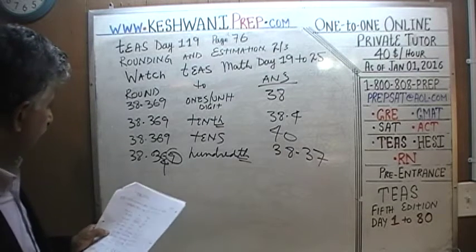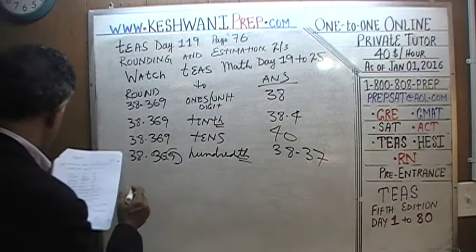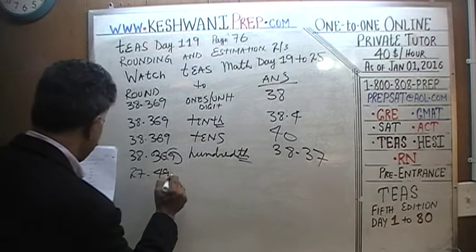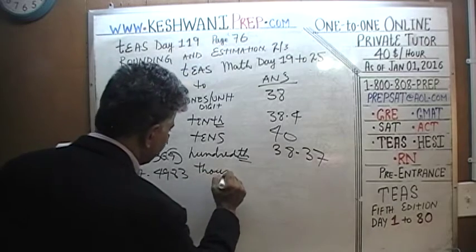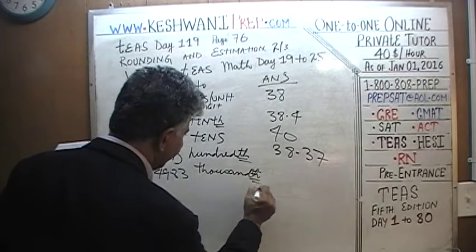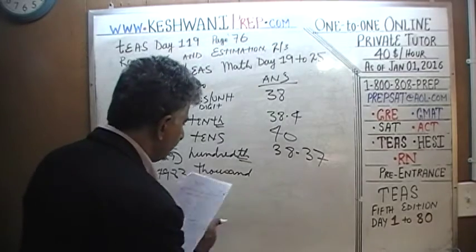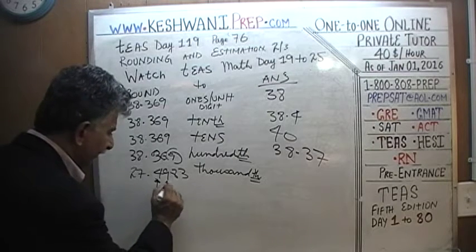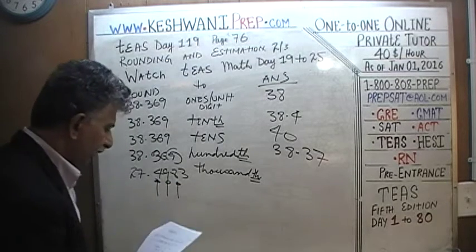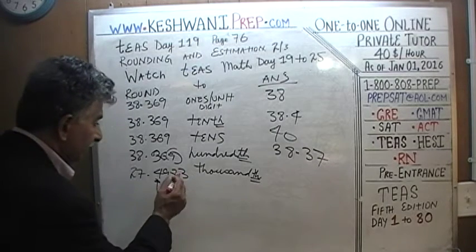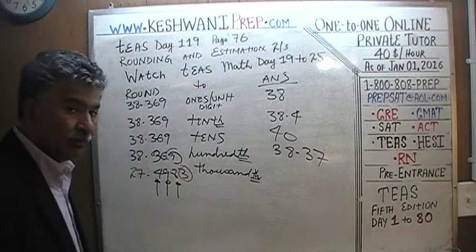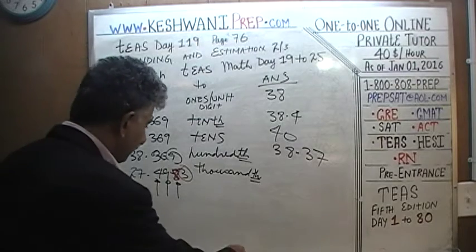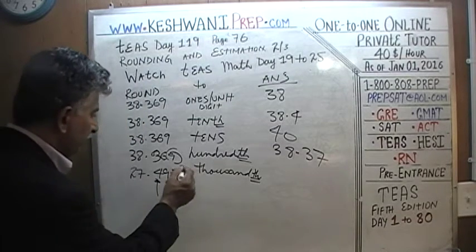Let's do the thousandths. How about 27.4983 to the nearest thousandth? The thousandths digit is the 8. The digit after it — in the ten-thousandths place — is 3, which is less than 5. So the 8 remains 8, and we drop the 3. The answer is 27.498.